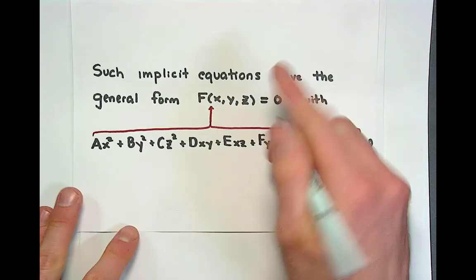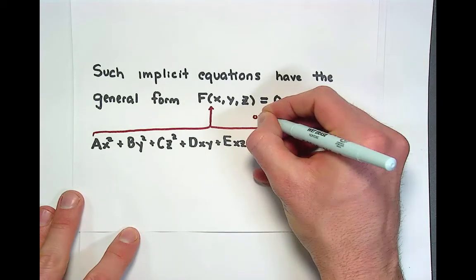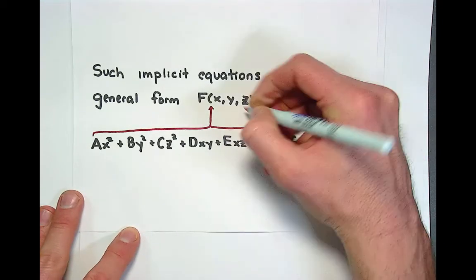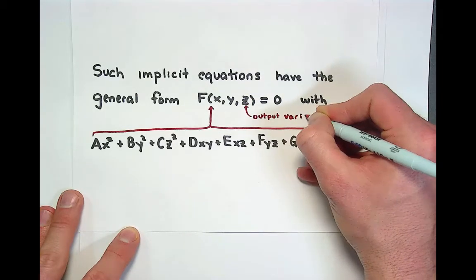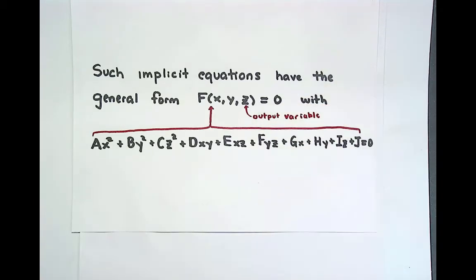And then this whole expression, this beast of an expression is the implicit function and it's implicit because if we think about z as our output variable, z is not written as a function of x and y.